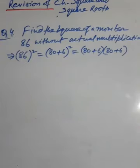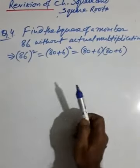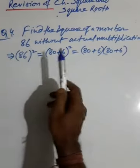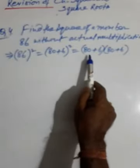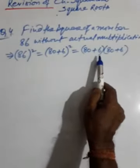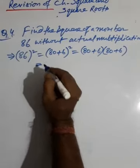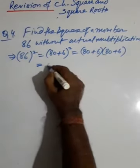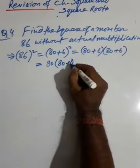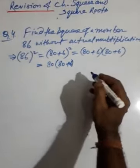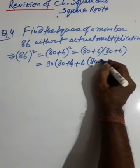Now, find the square of 86 without actual multiplication. We write 86² as (80 + 6)², which equals (80 + 6) into (80 + 6).